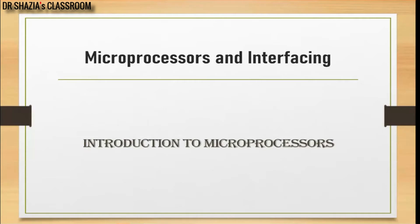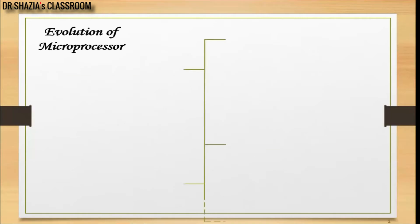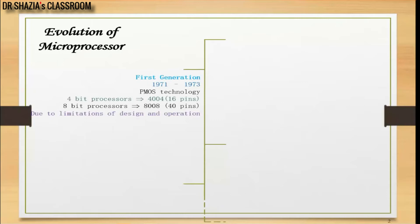So to start with, I will begin with the evolution of the microprocessor. Intel introduced its first 4-bit microprocessor, the 4004, in the year 1971, and its 8-bit microprocessor, the 8008, in the year 1972.